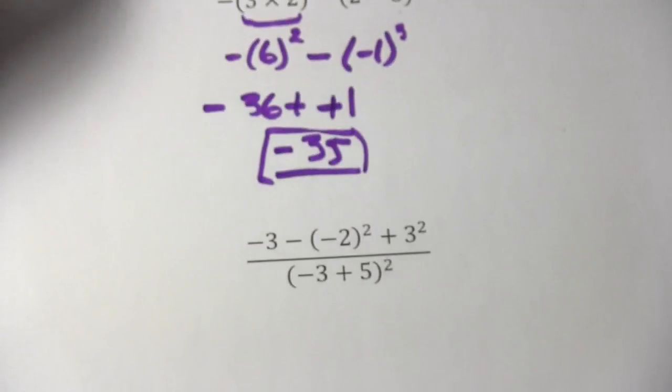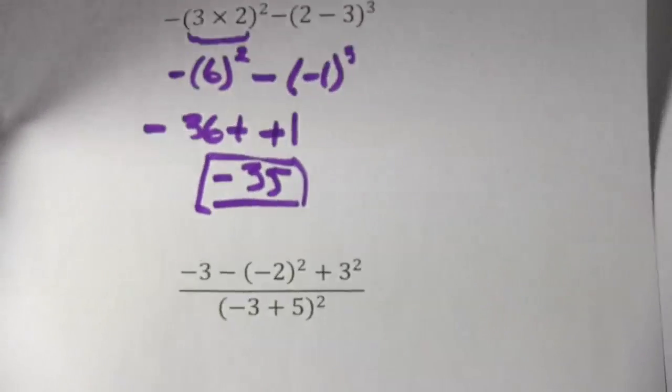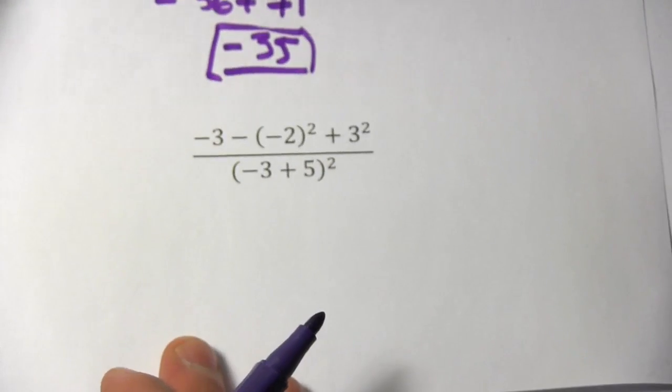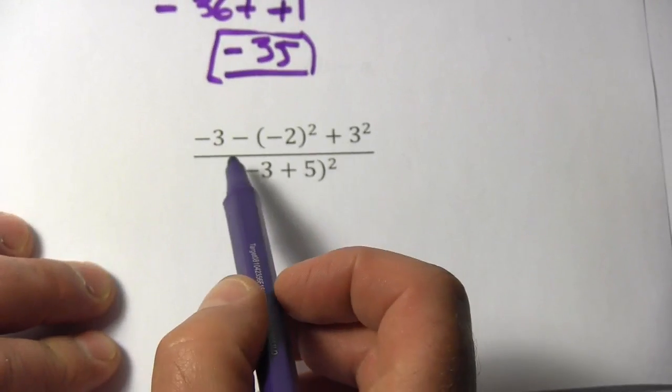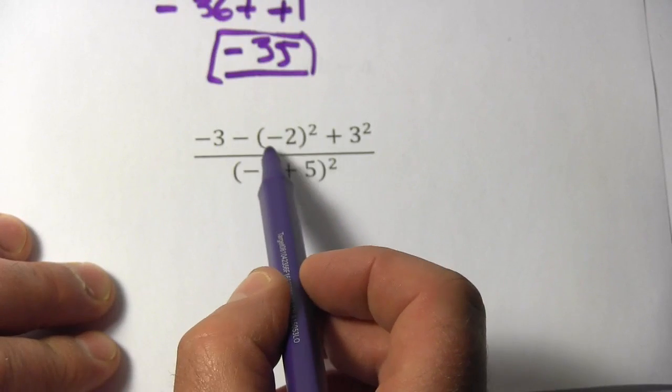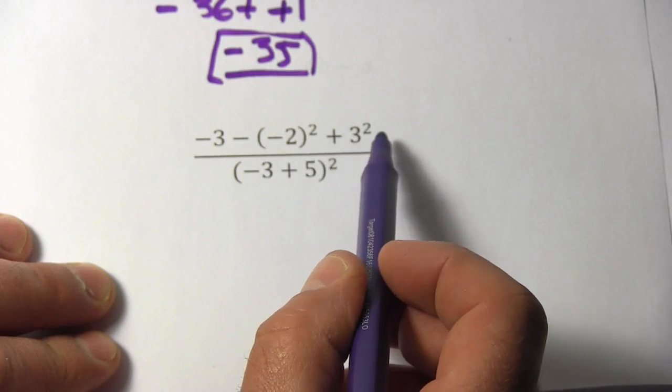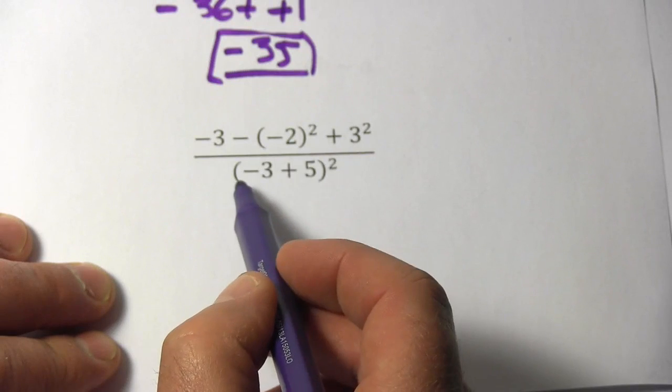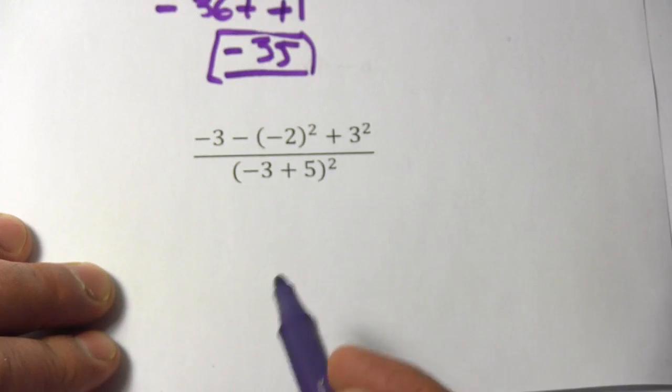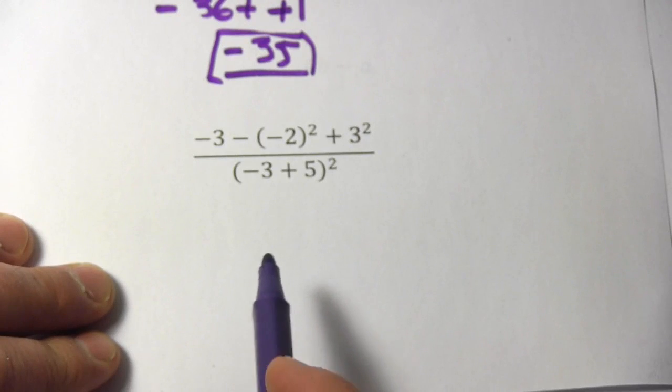Let's look at one more here, maybe a little trickier. Here we've got a big fraction, so we've got negative 3 minus negative 2 squared plus 3 squared over negative 3 plus 5 squared. How do you approach this? Well, use PEMDAS.